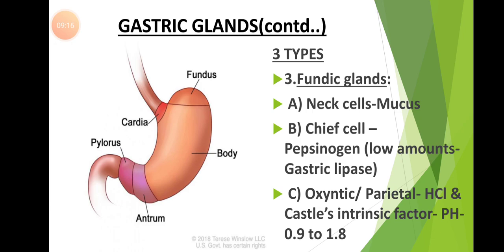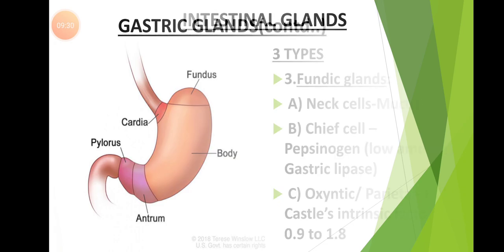The secretions of the gastric glands are called gastric juice. The pH of this gastric juice is 0.9 to 1.8.